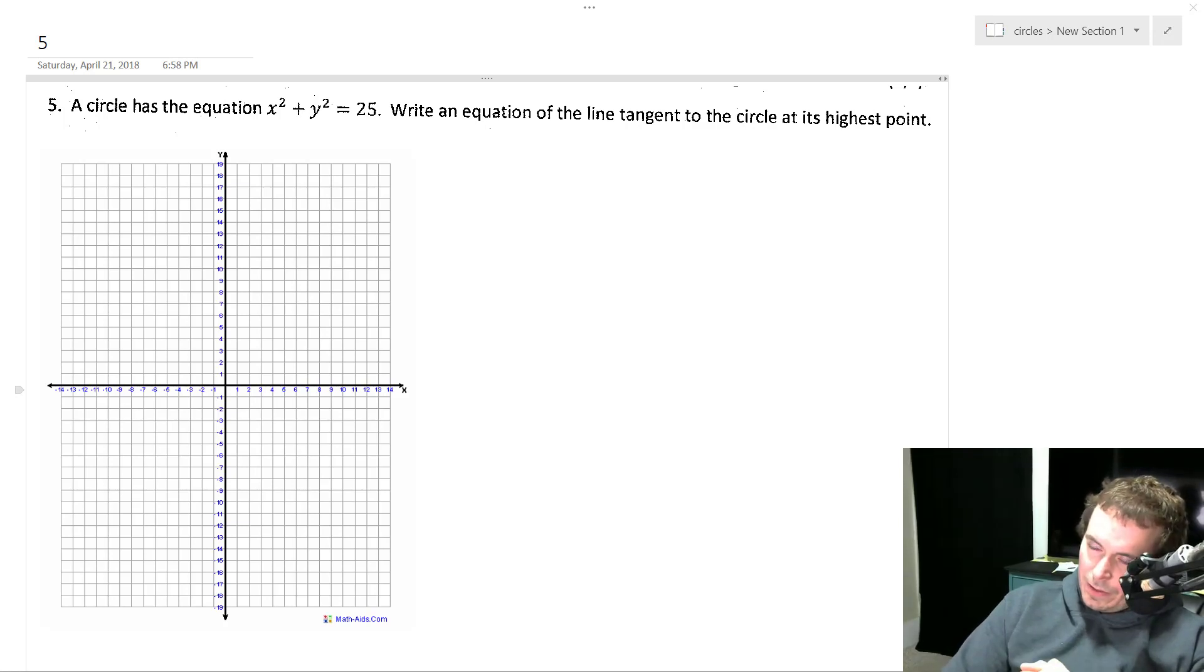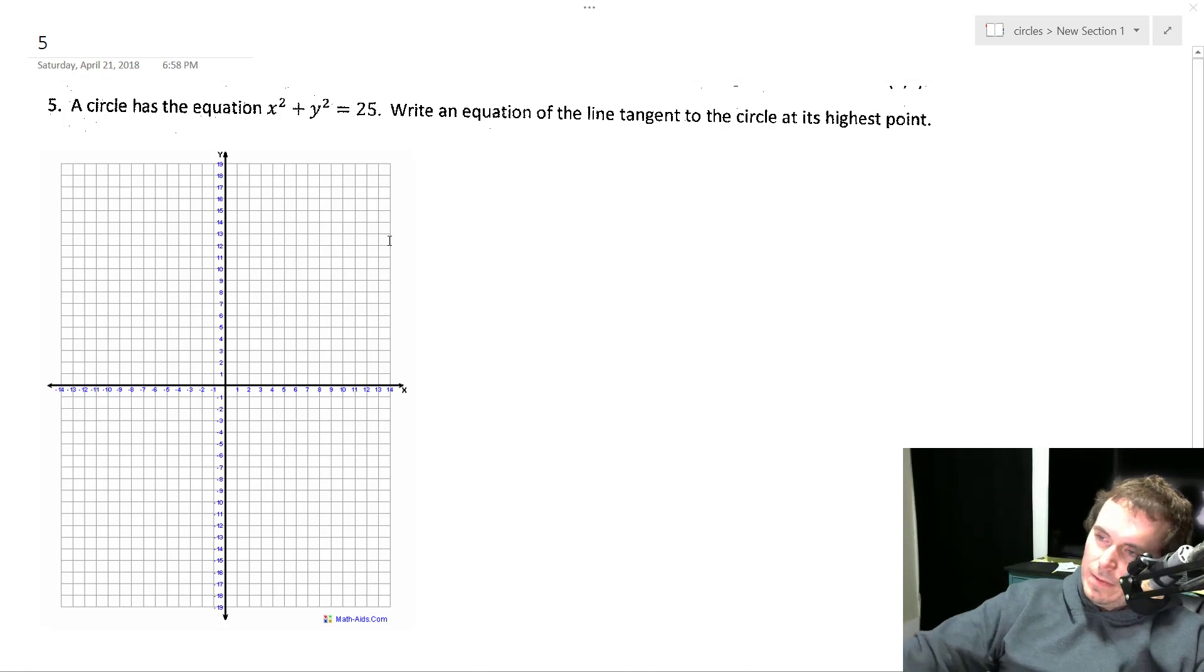So we have a circle here, its equation is x squared plus y squared equals 25. Usually the important parts here in the form are squared, so square root of 25 is 5, so it's got a radius of 5.